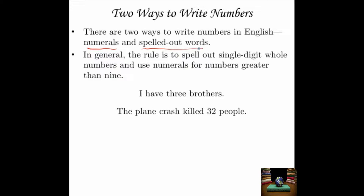In general, the rule is to spell out single-digit whole numbers, and to use numerals for numbers greater than nine. For example, I can say "I have three brothers" — three is a single-digit whole number, so I spell it out. But if you say "the plane crash killed 32 people," it's perfectly okay to use numerals because spelling out 32 would slow down the reader quite a bit.